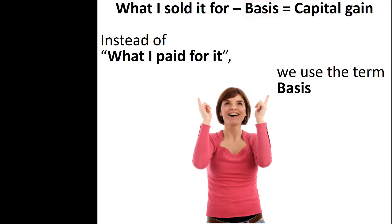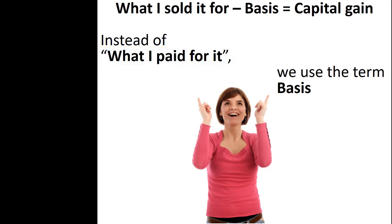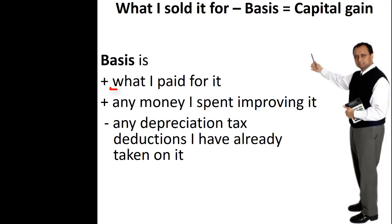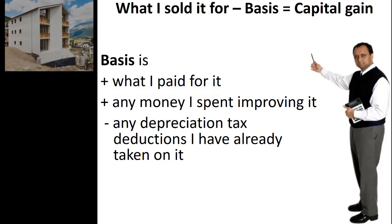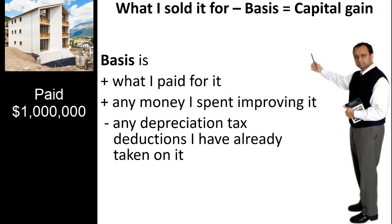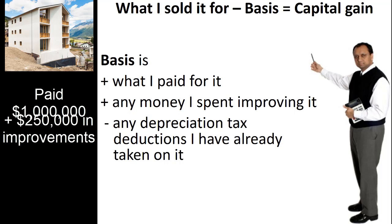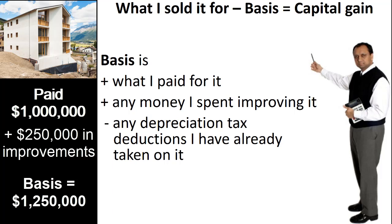In most circumstances, the basis is simply the amount that the taxpayer paid for the investment. However, basis is not always identical with the original price. Basis always starts as the amount paid for the investment, but it can be adjusted later. For example, if an investor purchases an apartment building for $1 million and then spends $250,000 making capital improvements and additions to the building, the investor's basis would increase to $1,250,000.